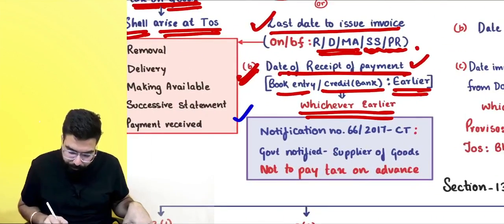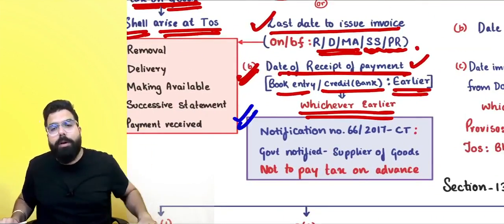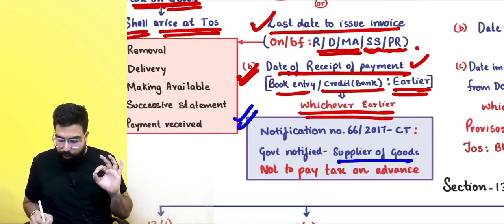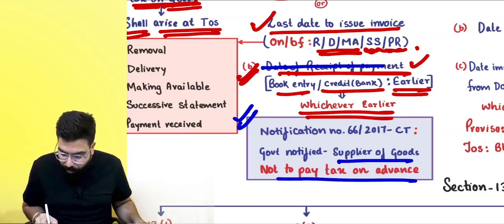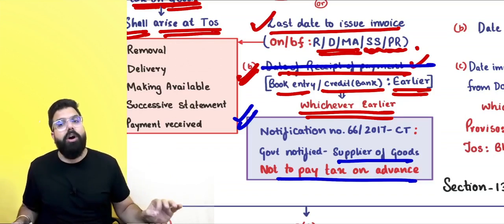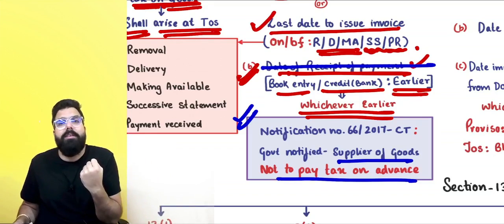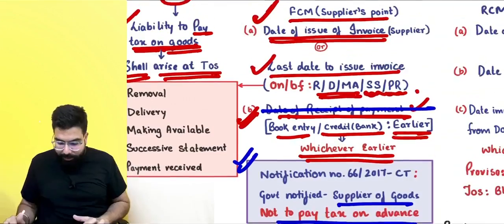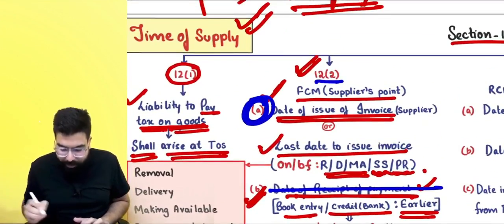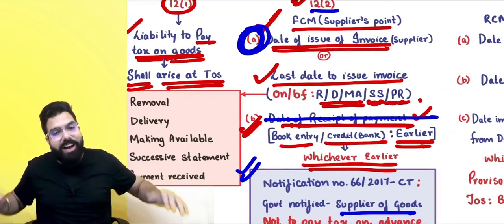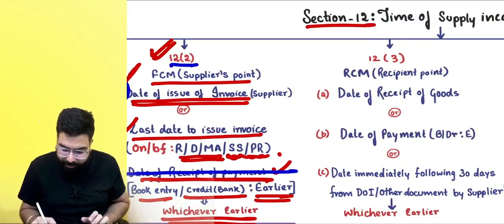Notification number 66/2017 was issued where the government told suppliers of goods not to pay tax on advance. Hence, if you are a supplier of goods, you don't have to pay GST on receipt of advance. Your time of supply is based on date of invoice or last date to issue invoice — whichever is earlier.